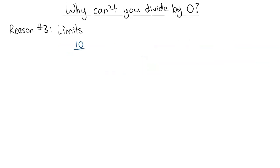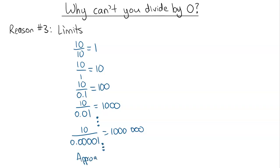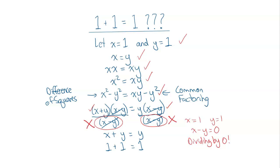The third reason is limits. If we look at 10 divided by 10, that equals 1. As we make the denominator smaller and smaller, we're just moving the decimal place one position to the right each time, giving us a larger and larger number. The closer we get the denominator to 0, the bigger the result — for example, 10 divided by 0.00001 gives 1 million. The value keeps growing and approaches infinity, going on forever and never ending.